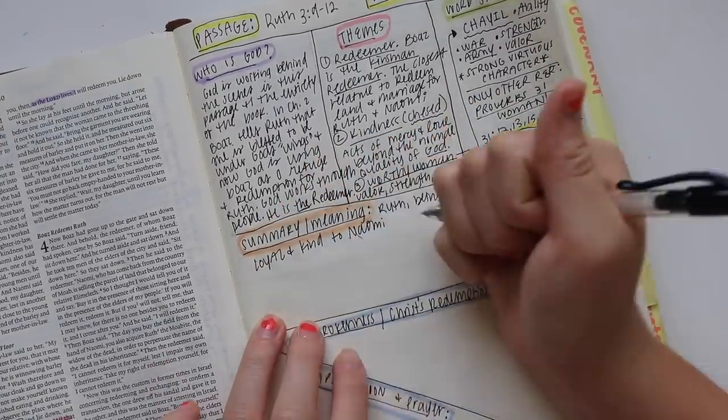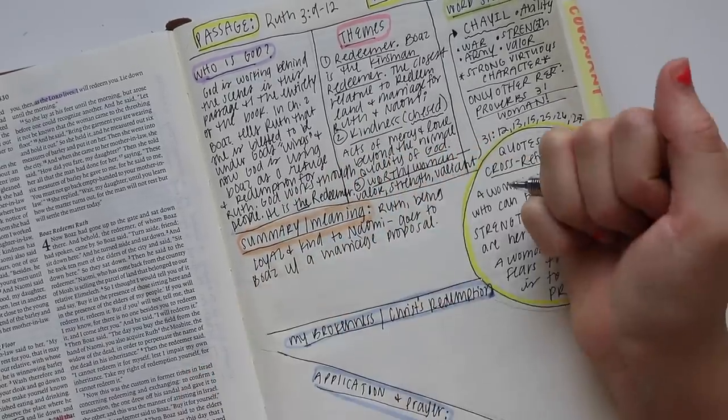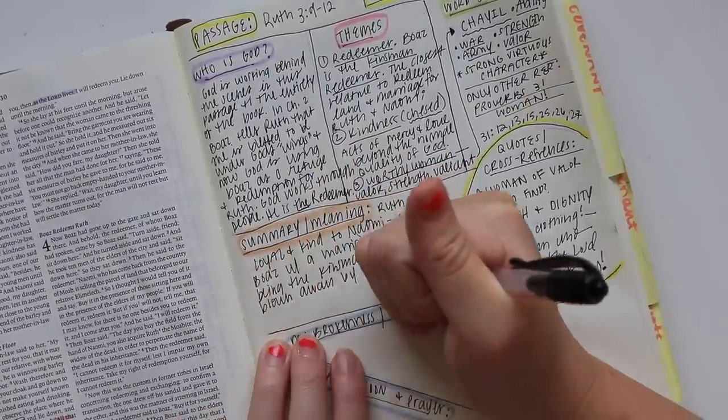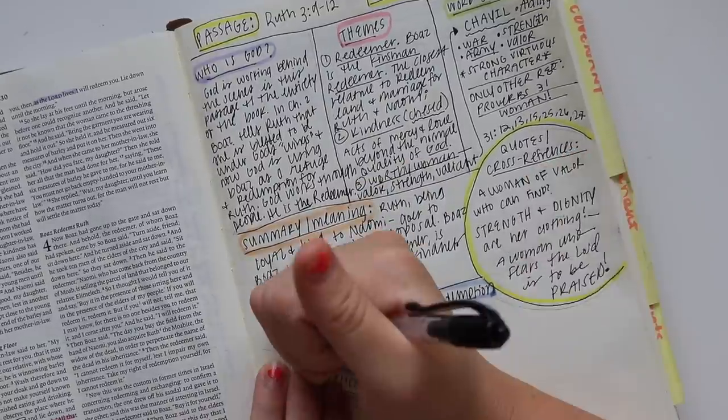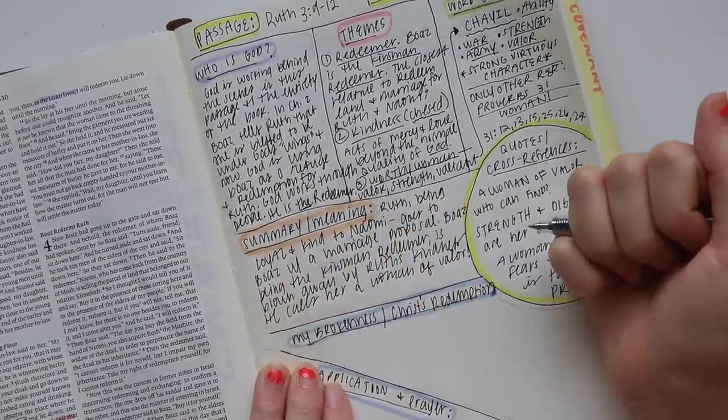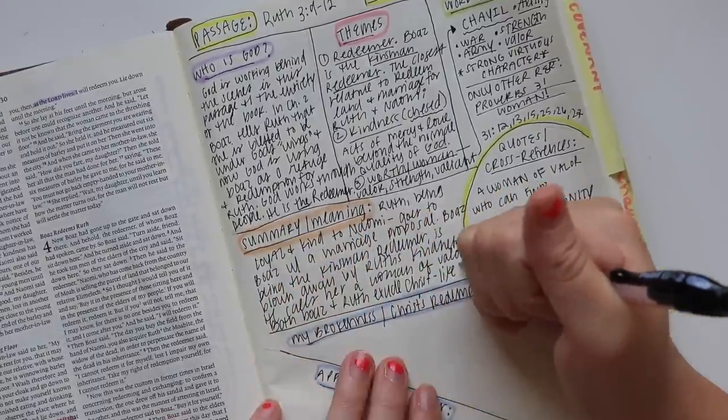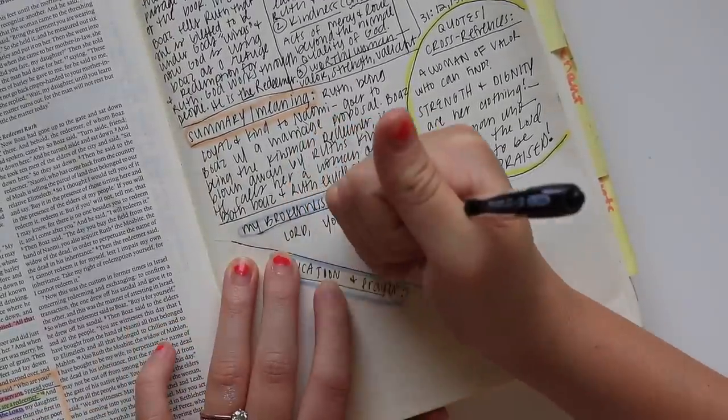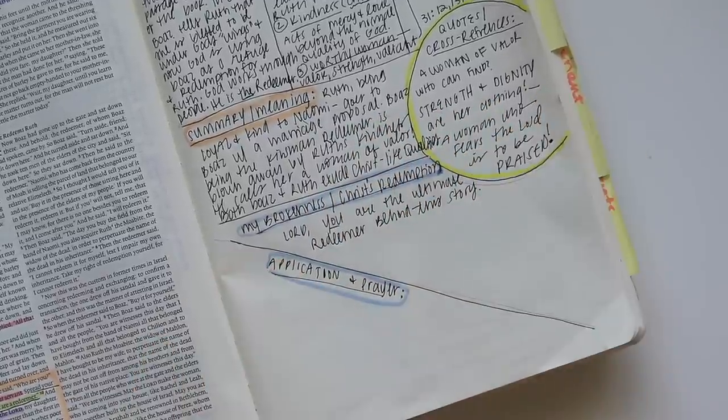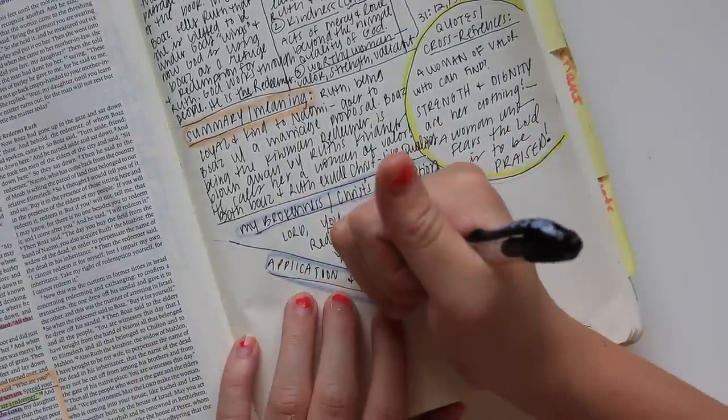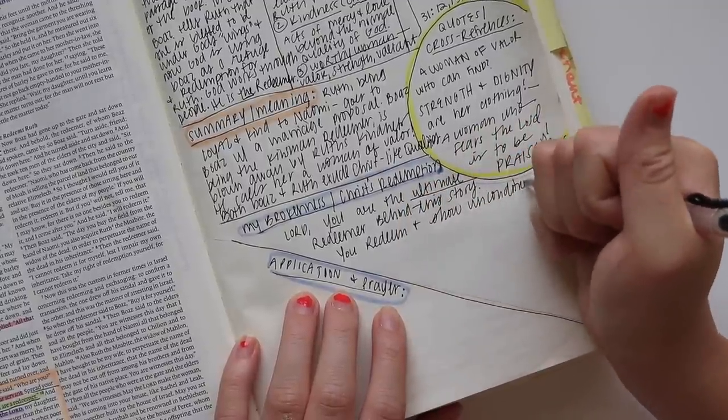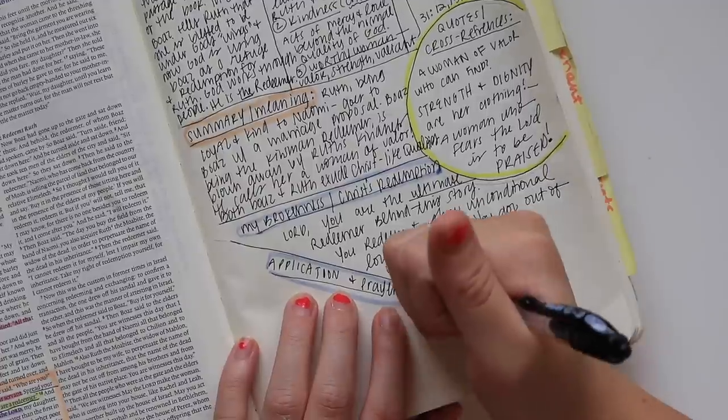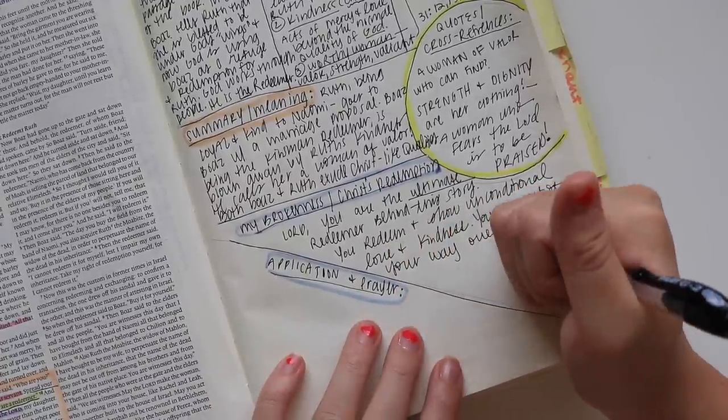Then to make sure I was understanding everything, I wrote a small summary. I said, 'Ruth, being loyal and kind to Naomi, goes to Boaz with a marriage proposal. Boaz, being the kinsman redeemer, is blown away by Ruth's kindness. He calls her a woman of valor. Both Boaz and Ruth exude Christ-like qualities.' Then lastly in my brokenness/Christ redemption section, I said, 'Lord, You are the ultimate redeemer behind this story. You redeem and show unconditional love and kindness. You go out of Your way over and over. Your ultimate act of kindness was in Your Son. Lord, I want to be a woman of valor and kindness. I want You and need You to work in my heart. My selfish nature resists to have a loyal and kind heart, but may Your work on the cross be an example to me that I am to follow in Your footsteps.'